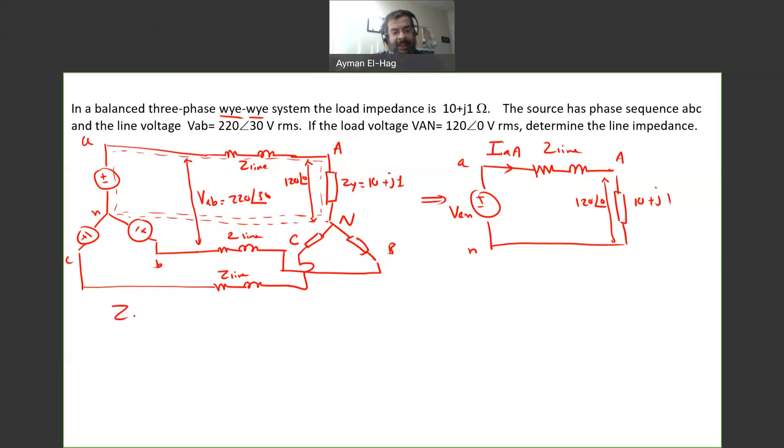We know that Z-line, as a matter of fact, is equal to the voltage at this node, which is VAN, minus the voltage at this node, minus VAN, divided by the current, which is IAA.